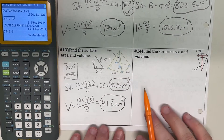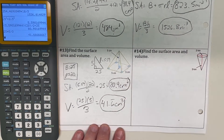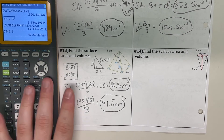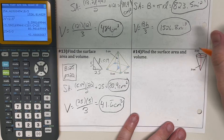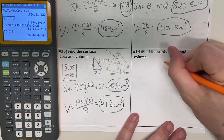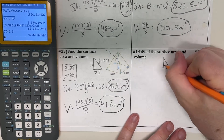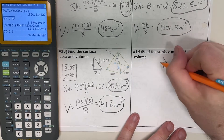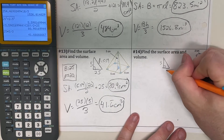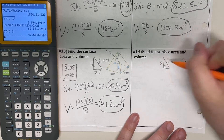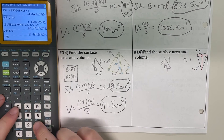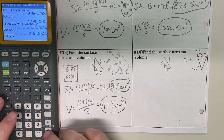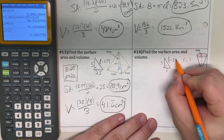Again, notice that volume is not always larger than surface area, so calculate carefully. For number 14, same idea with the cone. The radius is 1. Drawing the right triangle: height is 3, base is 1, looking for slant height. Square root of 3 squared plus 1 squared gives about 3.16.